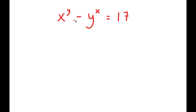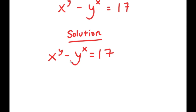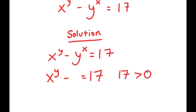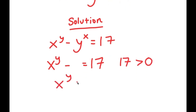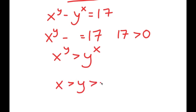In this problem, I have x to the power of y minus y to the power of x is equal to 17. To solve this, just by looking at this equation, what can we infer? Notice how we have x to the power of y minus something is equal to 17, and 17 is greater than 0, meaning x to the power of y is greater than y to the power of x. And this also must mean that x is greater than y, and y is greater than 0.